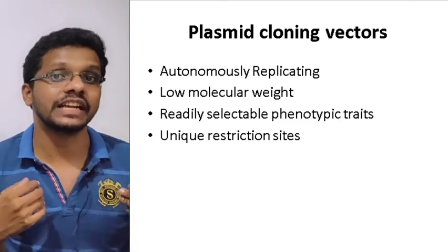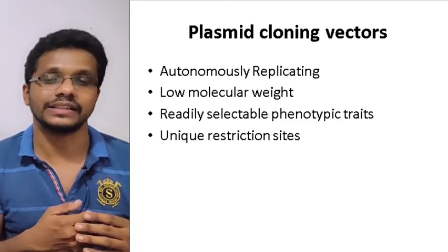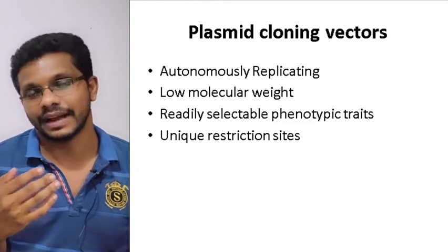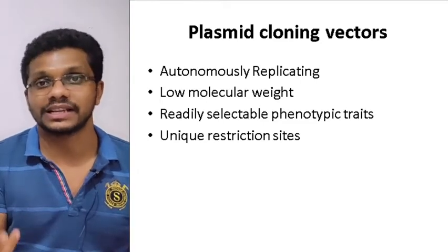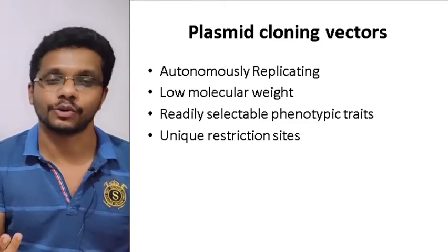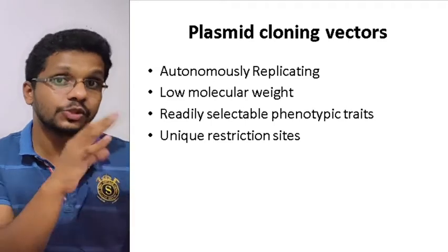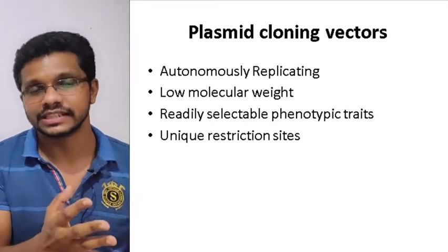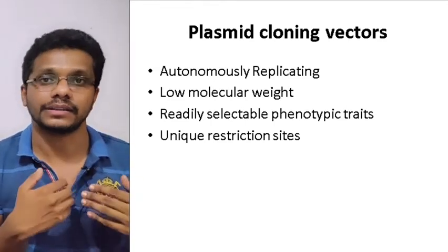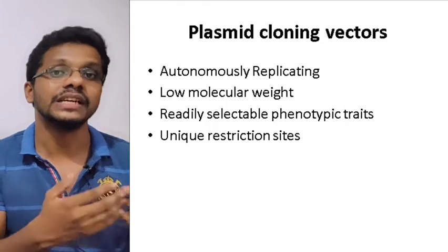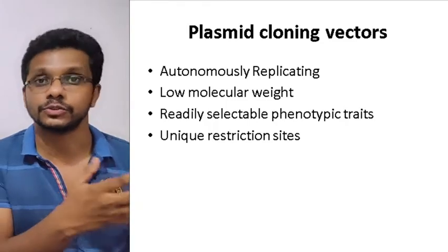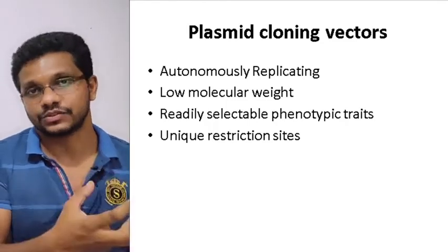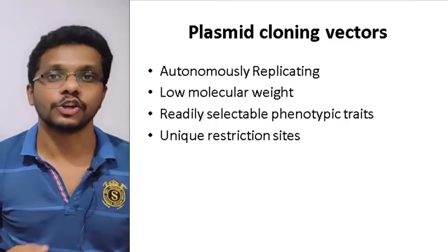What we need to look at is the bacterial cells which actually have the plasmid with the foreign DNA. The plasmid should have the characteristics or genes which actually help us to select the cells which are actually transformed with the recombinant plasmid.